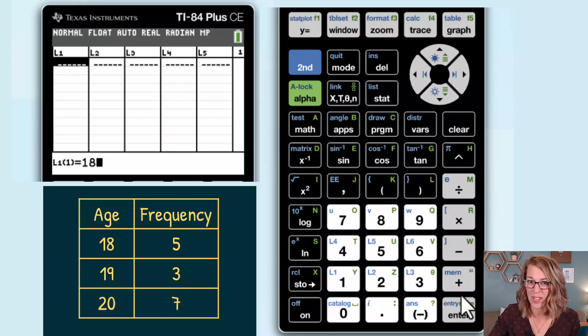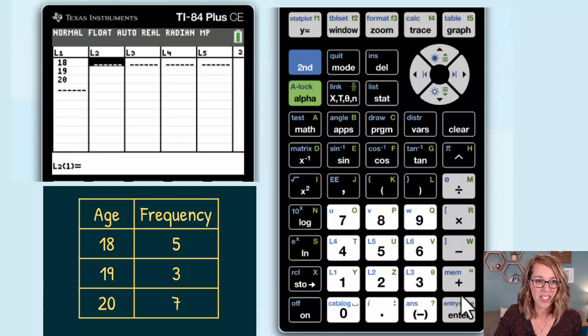Now I'm ready to enter my data. So I'm just going to enter the ages, 18, 19, and 20, and then my frequencies. So I've got five of the first group, three of the second group, and seven of the third group.